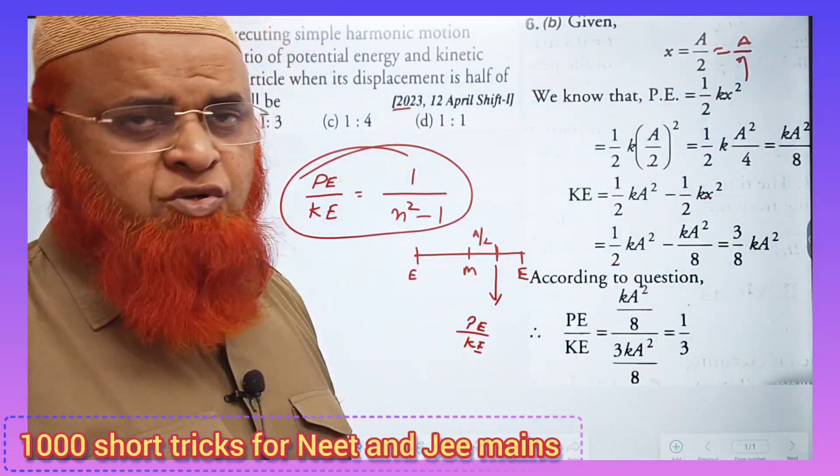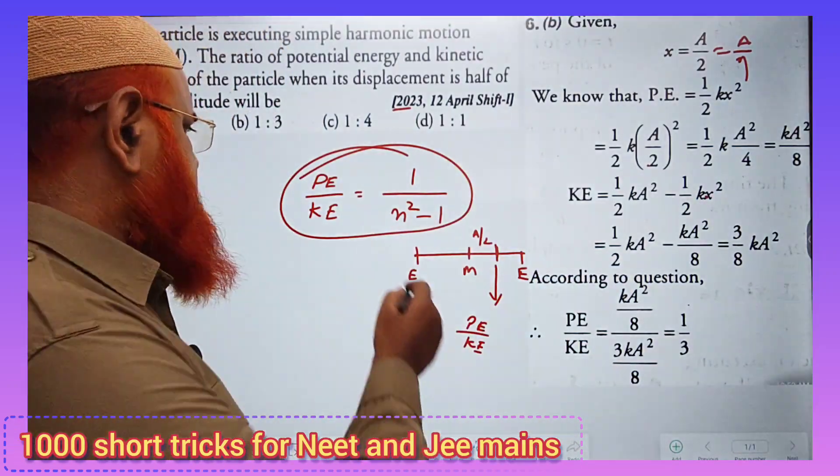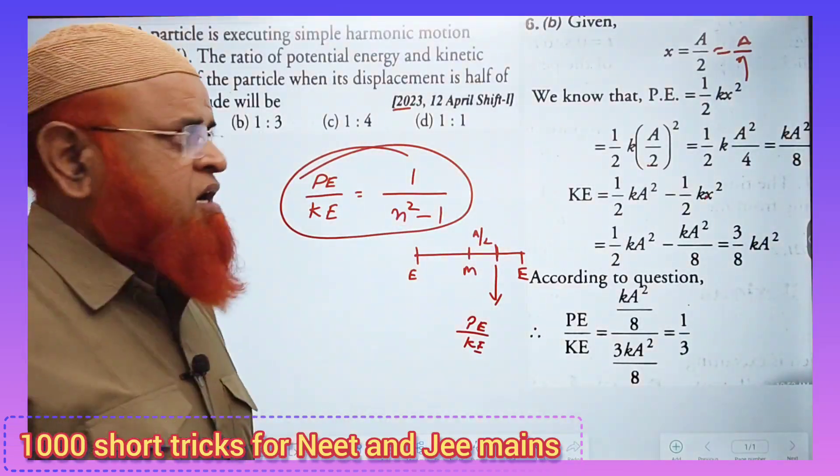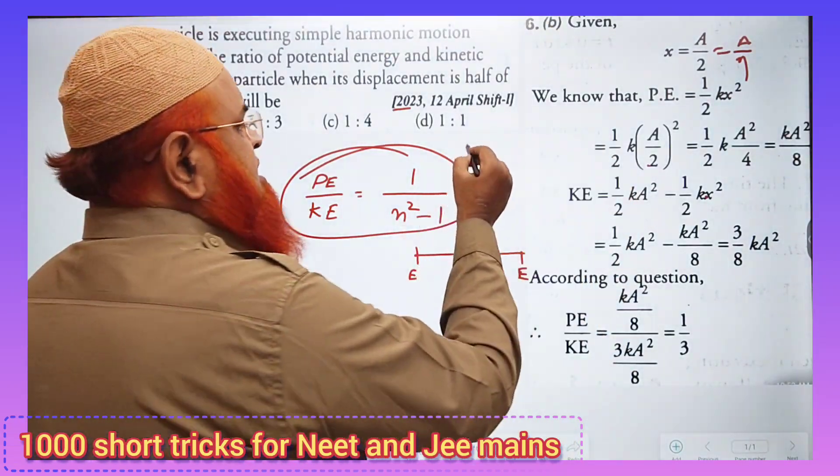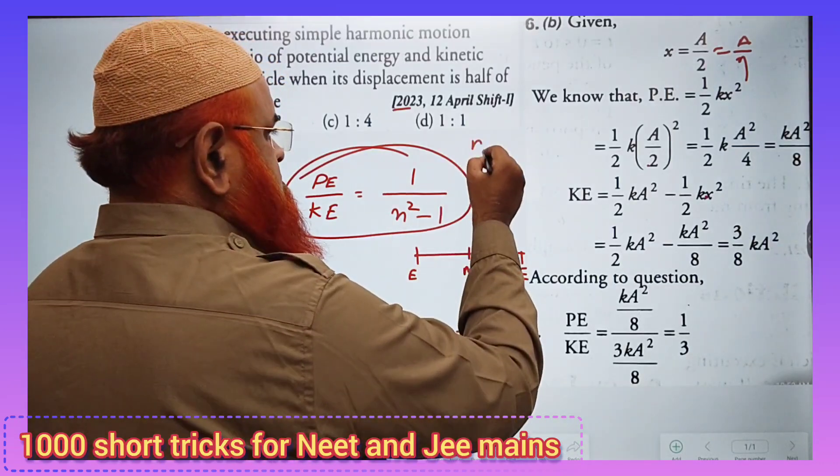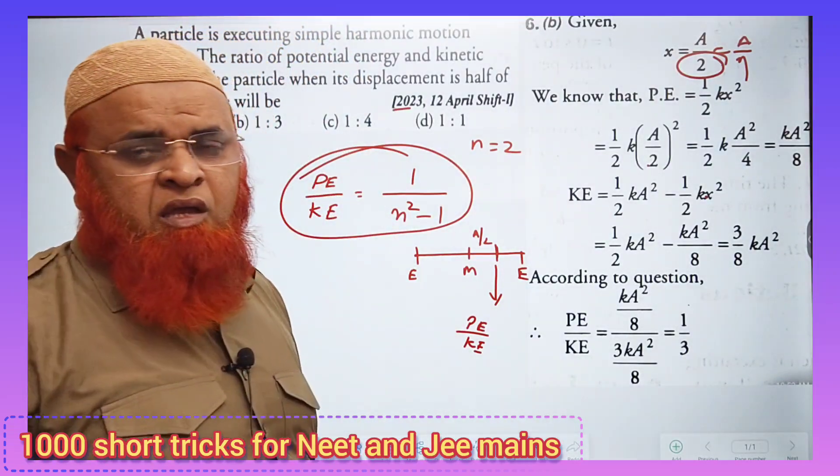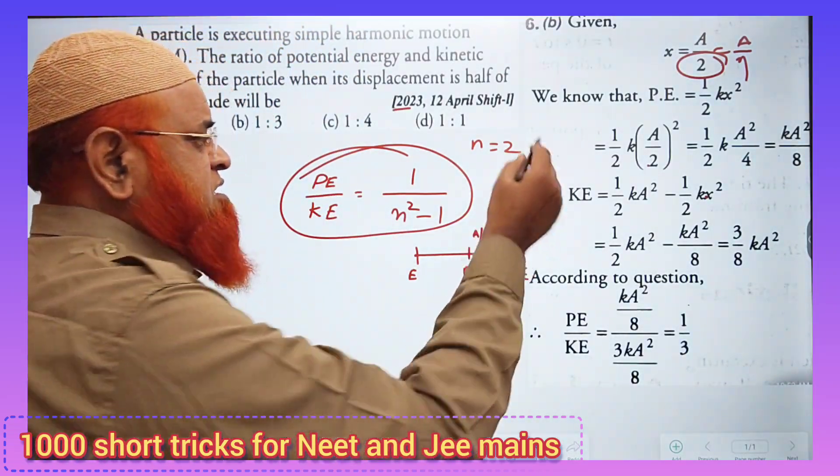Then I have found the ratio by using a simple shortcut formula that is P by K is equal to 1 by n square minus 1. And what is n here? So n is nothing but 2 because a by 2. So half of its amplitude, n is nothing but 2.